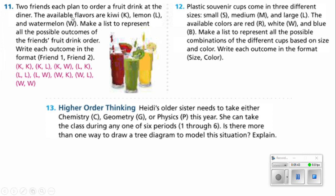The last combination would be that the first friend ordered watermelon, and then the second one ordered kiwi, lemon, or watermelon. That's going to give us 9 or 3 times 3.